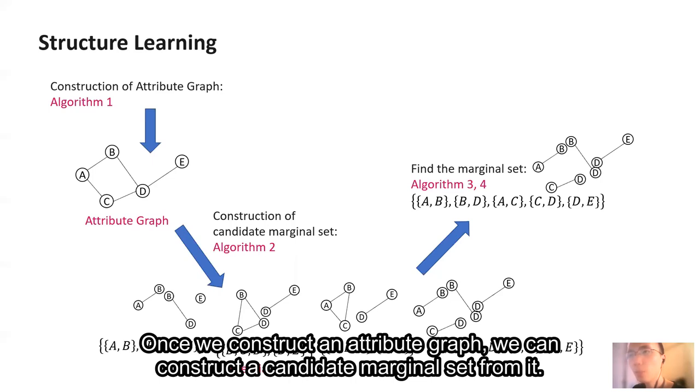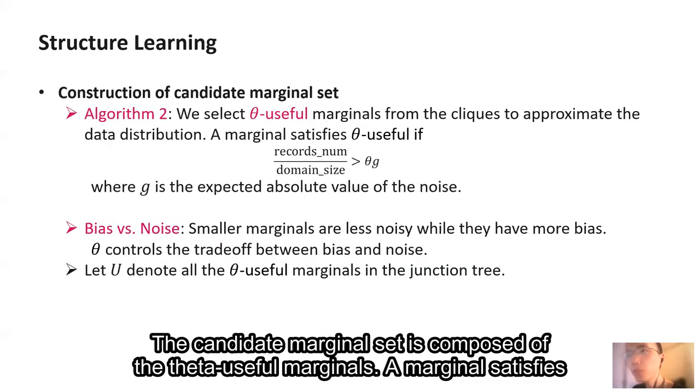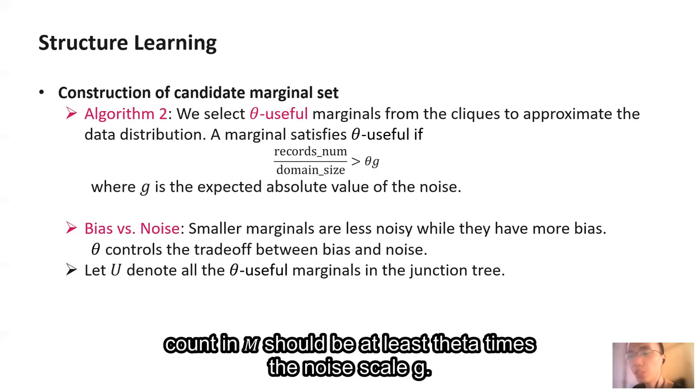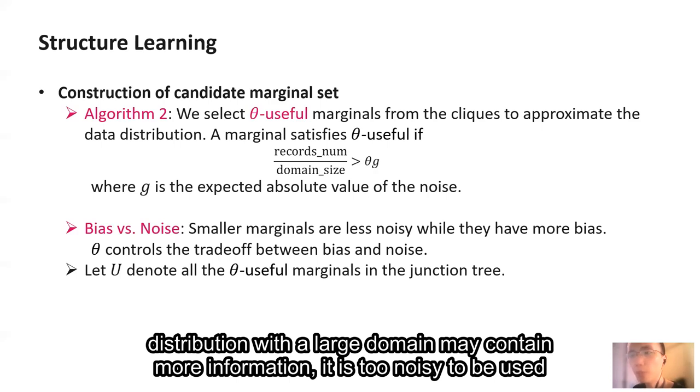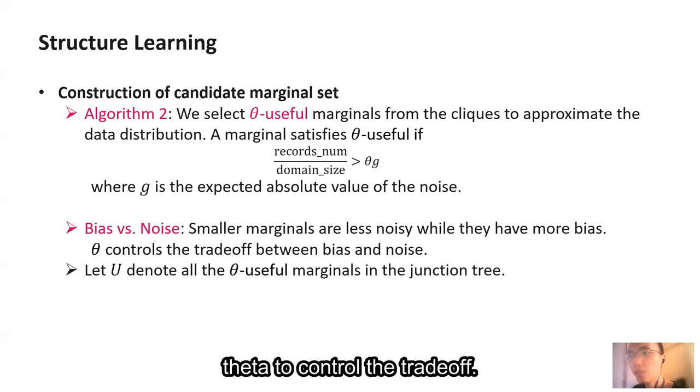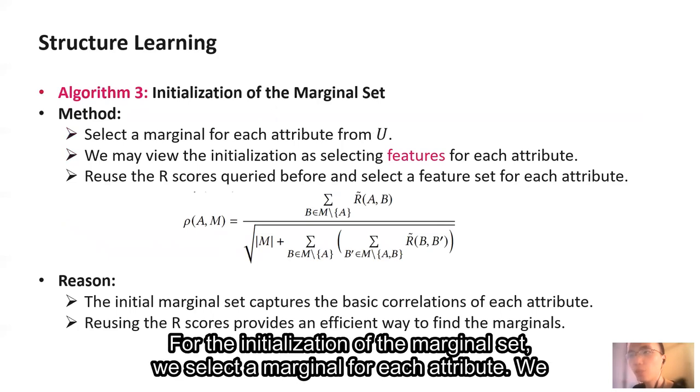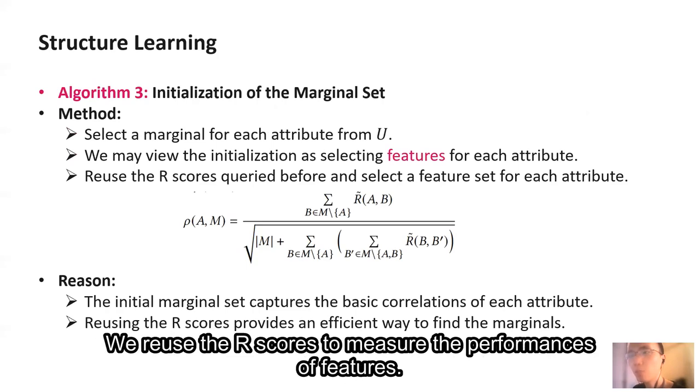Once we construct an attribute graph, we can construct a candidate marginal set from it. The candidate marginal set determines all the potential structures that we find later. The candidate marginal set is composed of the theta-useful marginals. A marginal satisfies theta-useful if its domain is sufficiently small. That is, we require that the average count in M should be at least theta times the noise scale G. The key idea is that although a marginal distribution with a large domain may contain more information, it is too noisy to be used in the model. It is actually a trade-off between bias and noise, and we use a hyperparameter theta to control the trade-off.